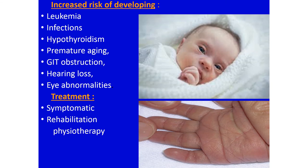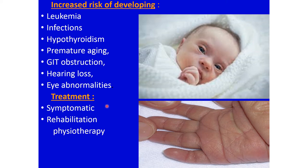Increased risks associated with Down syndrome include the simian crease, increased chances of leukemia, repeated and chronic infections, higher chances of developing hypothyroidism, premature aging, gastrointestinal obstructions, early hearing loss, and eye abnormalities. Unfortunately, we cannot change the genetic makeup of these babies — treatment is symptomatic, addressing complications like infections and hypothyroidism, along with rehabilitation and physiotherapy.